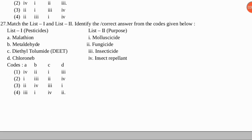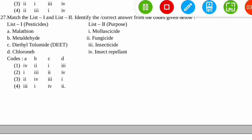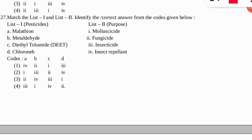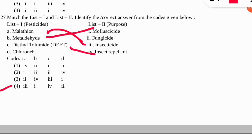The next match-the-following is based on pesticides and their purpose. The correct option is number four. Malathion is used as an insecticide. Metaldehyde is used as a molluscicide. Dimethyl toluamide (DEET) is used as an insect repellent. Chloronab is used as a fungicide.